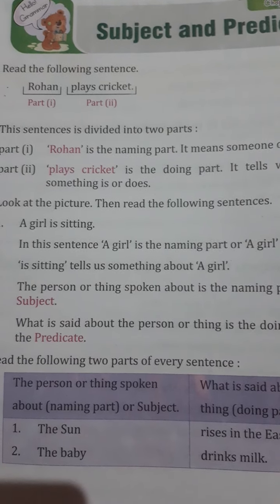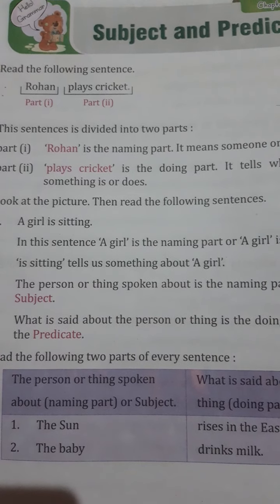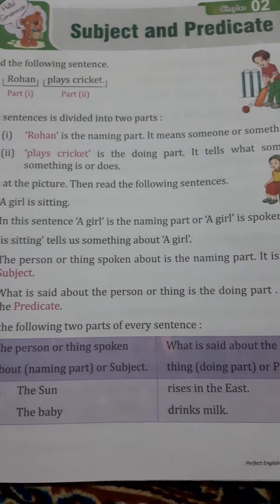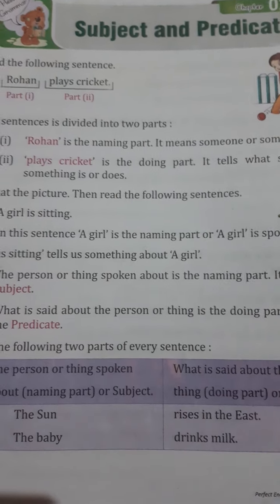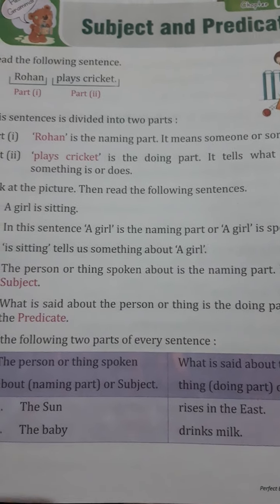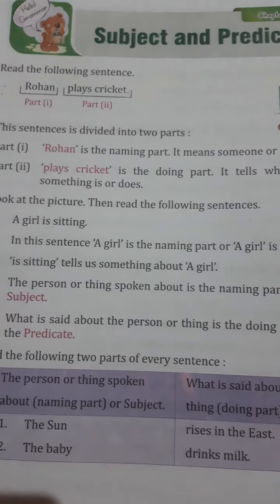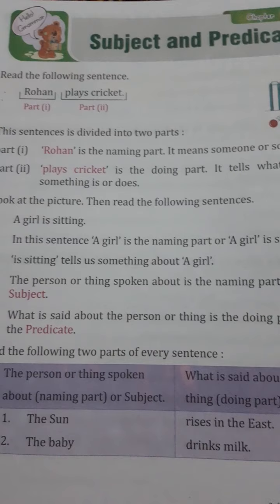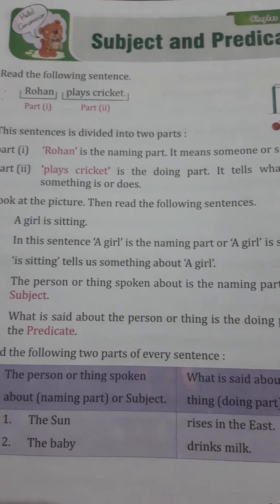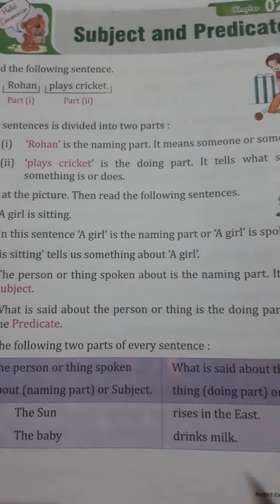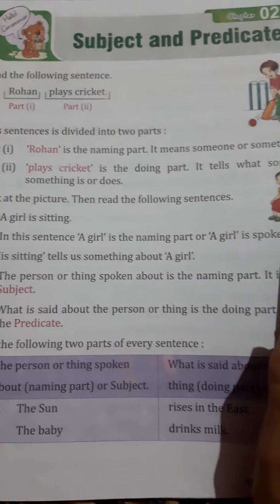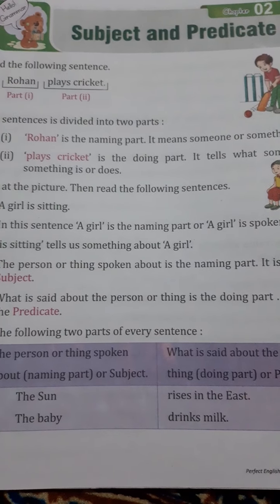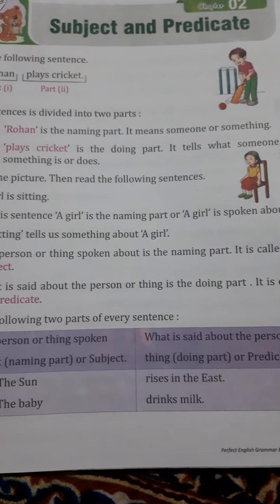This sentence is divided into two parts, part 1 and part 2. Rohan is the naming part — it is someone or something. The naming part is the subject. 'Playing cricket' is the doing part. The subject tells us what someone or something is doing.